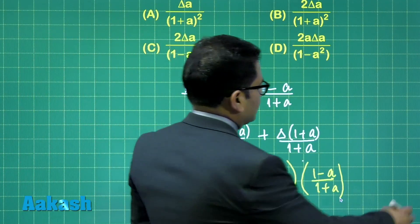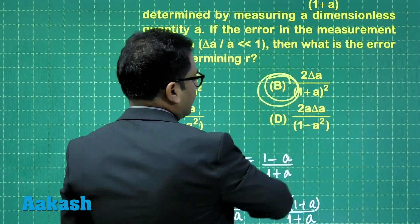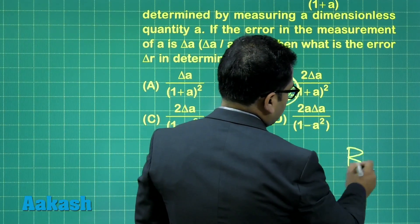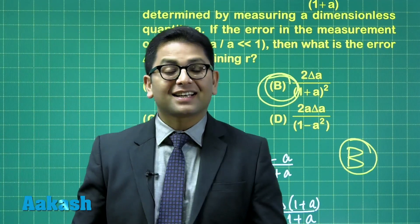So you multiply it and solve. That's a very simple solution. You would get option number B as the correct one. So for question number 17, option number B is the correct answer.